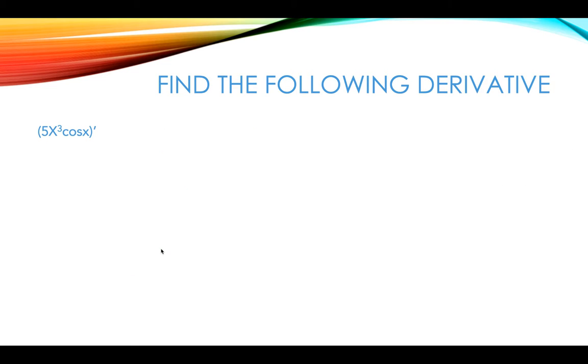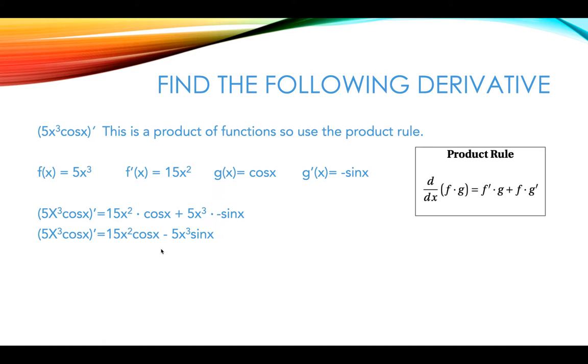We've got 5x cubed times cosine x and we want to know the derivative of that. We've got a product of two functions and we want to identify our f of x, f prime of x, g of x, and g prime of x. So f of x is 5x cubed, its derivative is 15x squared. g of x is cosine of x, its derivative is negative sine x.